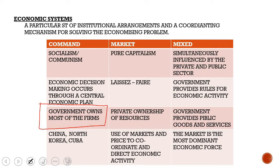The market economic system is an economy in which the private decisions of consumers, resource suppliers, and firms determine how resources are allocated. This involves private ownership of resources and businesses, and private businesses and individuals make economic decisions. This is pure capitalism, also known as laissez-faire, with no or little government intervention, a lot of self-interest, and private ownership of resources.